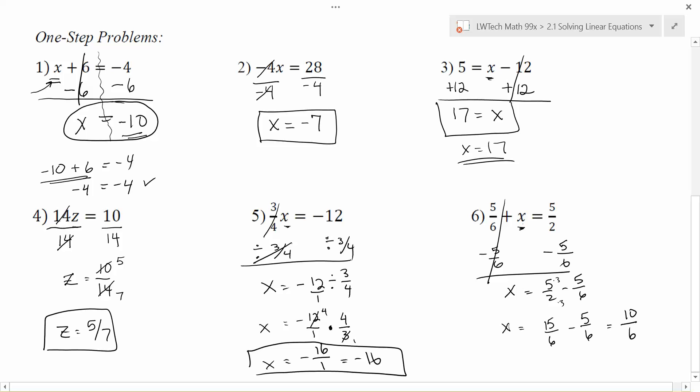Now we just subtract the tops, keep the bottom the same, and I have 10/6 as a solution. Kind of okay, but not quite. This final solution, always check to see if your fraction can be reduced. So 2 goes into both the top and the bottom here, and I'm left with x equals 5/3 as my solution.